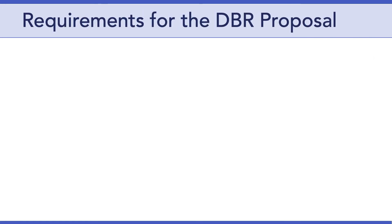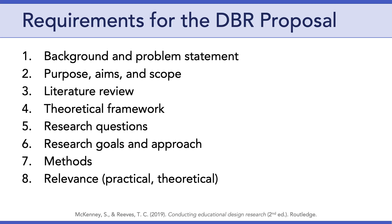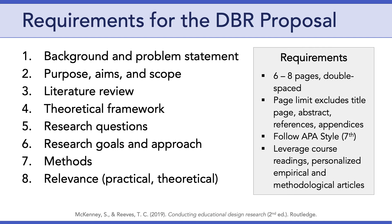Let's talk about the requirements for the DBR proposal. Your DBR proposal needs to have eight sections: background and problem statement, purpose, aims and scope, a literature review, theoretical framework, research questions, research goals and approach, methods, and relevance. Don't panic — that seems like a lot, but I'm not asking you to write another dissertation. These eight requirements need to fit into six to eight pages double-spaced. So this is a pretty short paper — if you went with eight pages, you would have about one page per section, though some sections will be longer than others depending on your writing style and project needs.